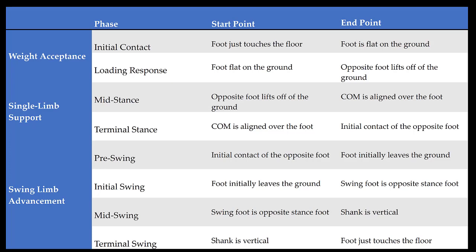The gait cycle is commonly divided into both stance and swing. If we break up the gait cycle into stance and swing, stance phase consists of initial contact, loading response, mid-stance, terminal stance, and pre-swing, while the swing phase includes initial swing, mid-swing, and terminal swing.